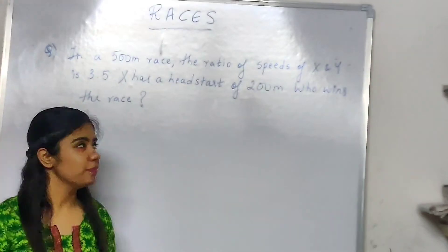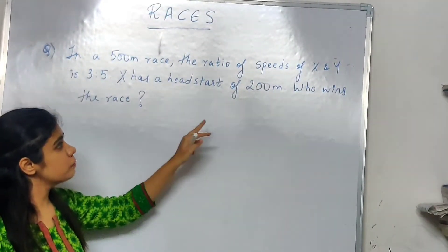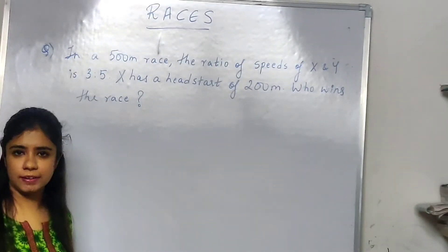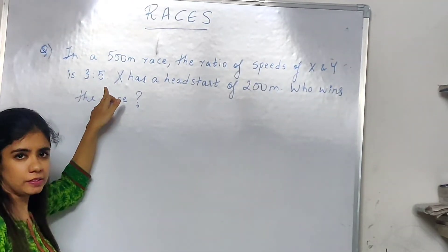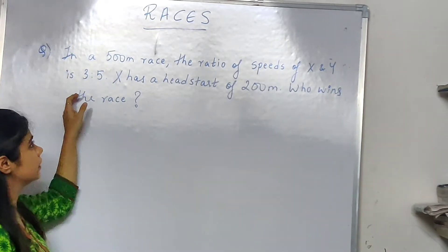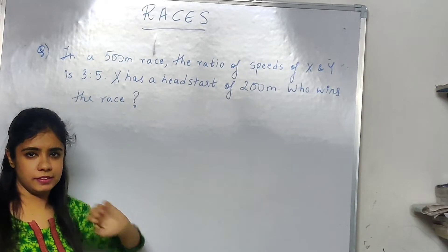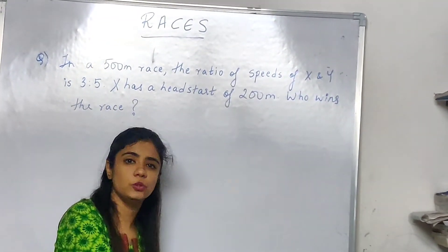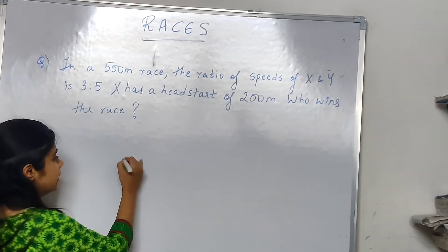Now let's look at the next question. In a 500 meter race, the ratio of speeds of X and Y is 3 to 5. So when X covers 3 meters, Y covers 5 meters. X has a head start of 200 meters, so X is already 200 meters ahead. Who wins the race?